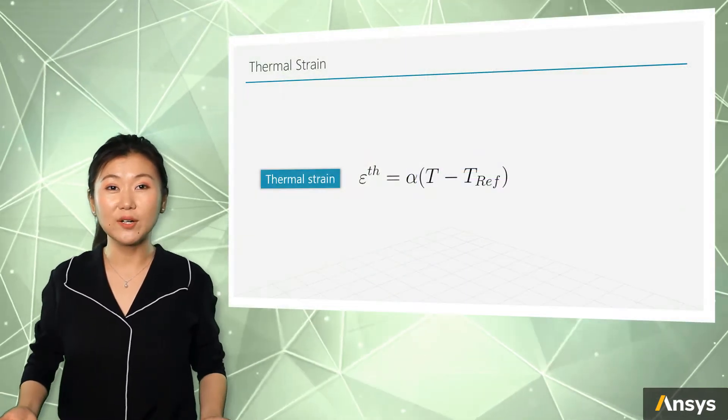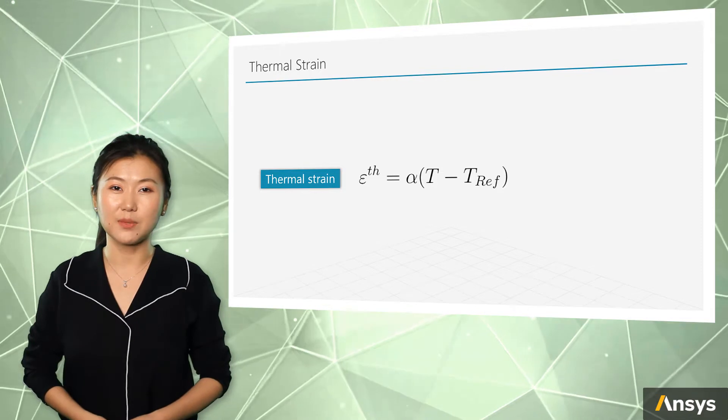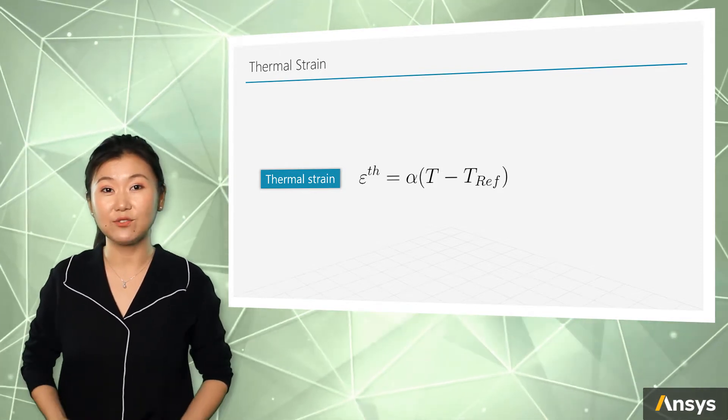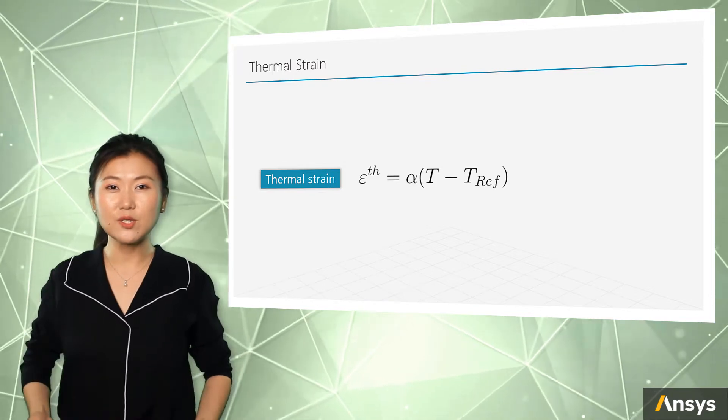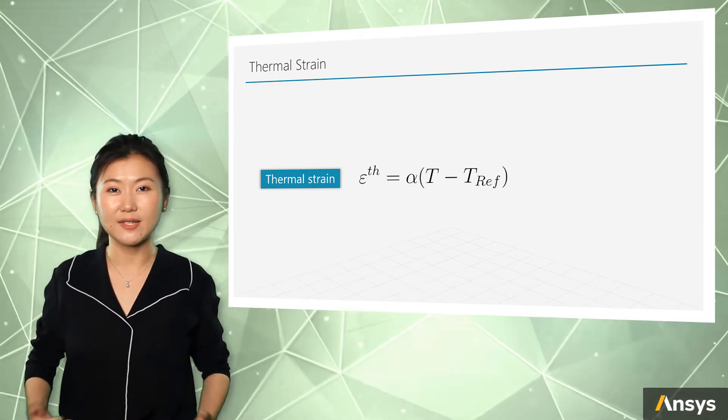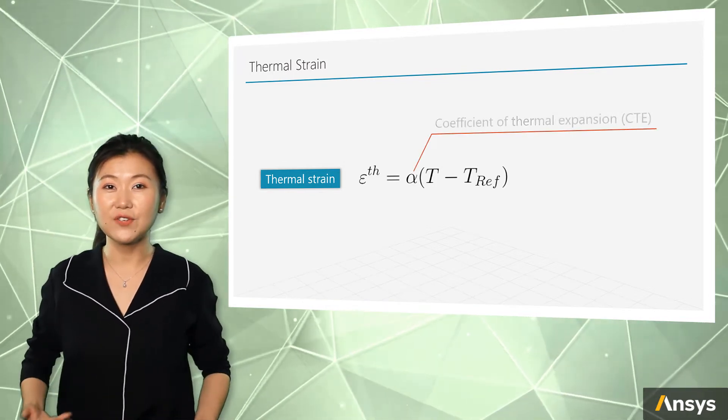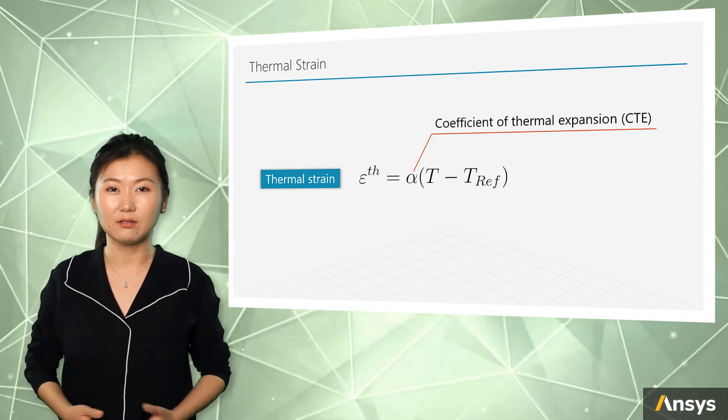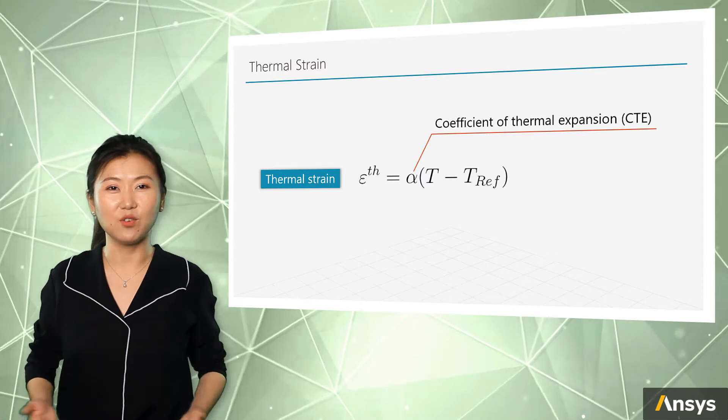Thermal strain is purely determined by the material's property. Different materials respond to thermal condition differently. We use a simple coefficient to characterize it, which is called coefficient of thermal expansion and is denoted by alpha here. People call it CTE for most of the time.